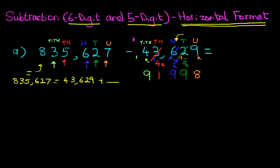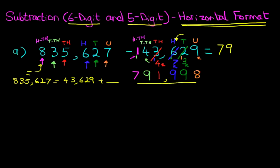We've now got the 100-thousands. How many 100-thousands have we got? We've got 1. How many do we need to get to? We need to get to 8 — that's our target. So what number added to the 1 is going to give us 8? The answer is 7. And that is our answer. Let's write it down properly: we've got 791,998.